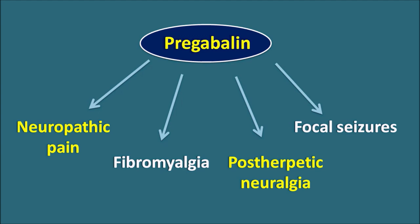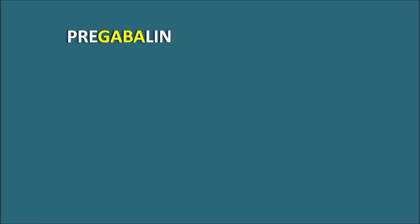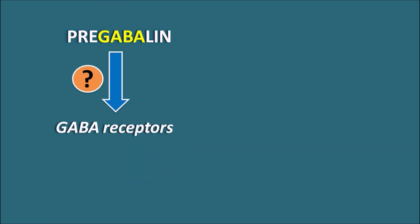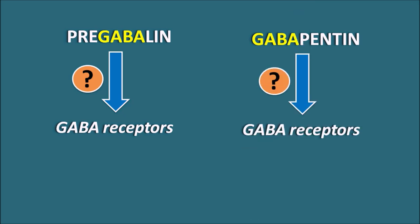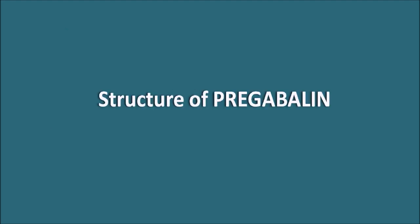How does pregabalin act? Within the name pregabalin, you can observe 'gaba' as an infix. What is the relation of pregabalin to GABA receptors? We can also find a related drug, gabapentin, which again contains the term 'gaba.' Even though both pregabalin and gabapentin have 'gaba' in their names, they are not acting on the GABA receptors. These two drugs are structurally related to GABA but have no action on GABA receptors.